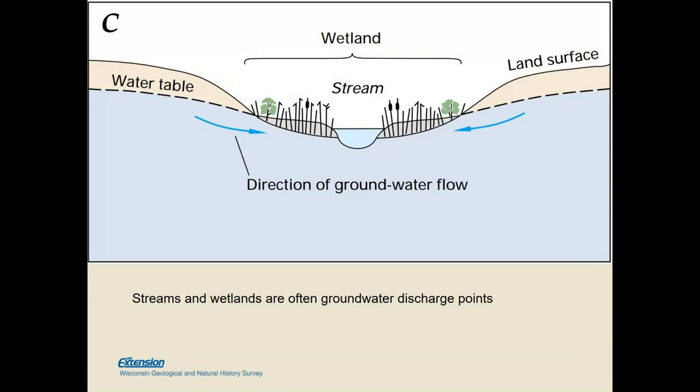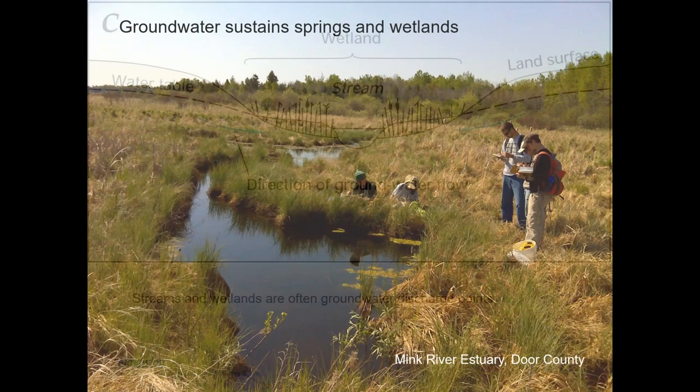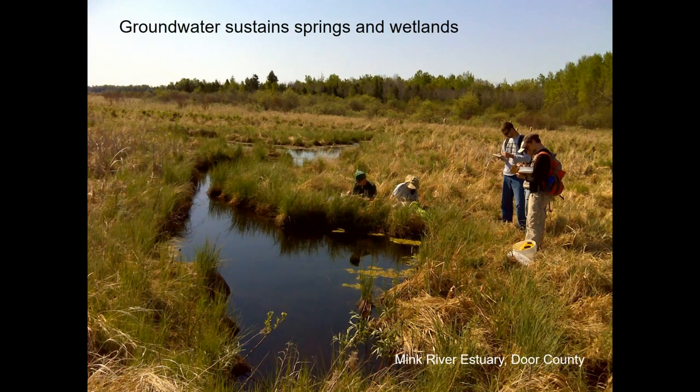Wetlands — and Wisconsin has a lot of them — are often groundwater discharge points, and that's what sustains streams and wetlands. Here are springs up in the Mink River Estuary in Door County. Wisconsin has many trout streams that flow perennially because they are sustained by groundwater discharge. These are the discharge points for groundwater.